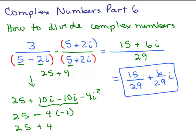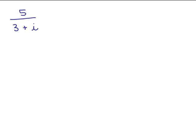Let's try another one. Here's another example, 5 over 3 plus i. So since we don't just have a pure imaginary number, we're going to have to multiply the numerator and denominator by the conjugate of 3 plus i, which will be 3 minus i.